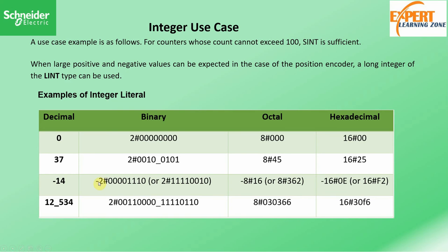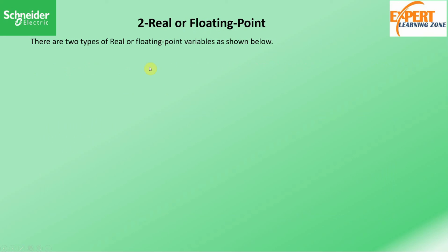For negative numbers, such as negative 14, it has two representations: the negative binary form and its two's complement positive equivalent. To enhance readability, you can represent numbers with underscores — for example, 12534 can be written as 12_534. Similarly, a 16-bit binary string can be written in two groups of 8 bits separated by an underscore. The system still accepts this format.